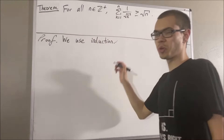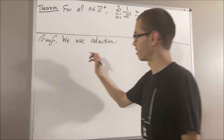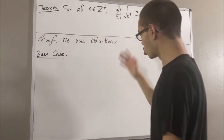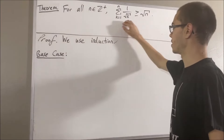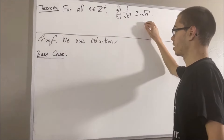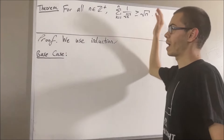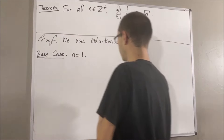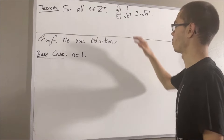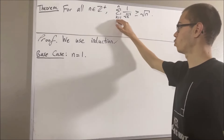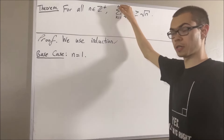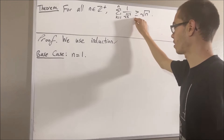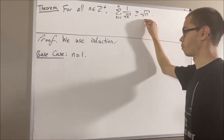So let's start with the base case. In the base case, we're trying to prove that this is true in the case where n is equal to 1. So really, we want to show that the sum from k equals 1 to 1 of 1 over the square root of k is greater than or equal to the square root of 1.